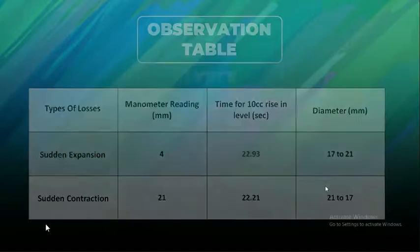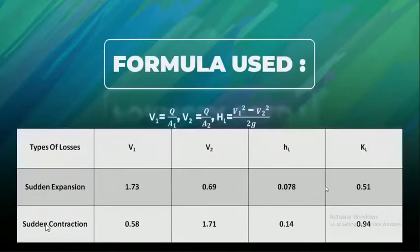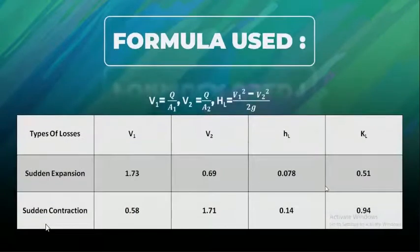Now I will discuss the formula used. The V1 column is initial velocity, which is volumetric flow rate Q by cross-sectional area A1. The V2 column indicates the final velocity, which is flow rate Q upon cross-sectional area A2. The K_L is the resistance coefficient value during sudden expansion and sudden contraction. Now head loss of flow is K_L into V1 squared minus V2 squared by 2g.